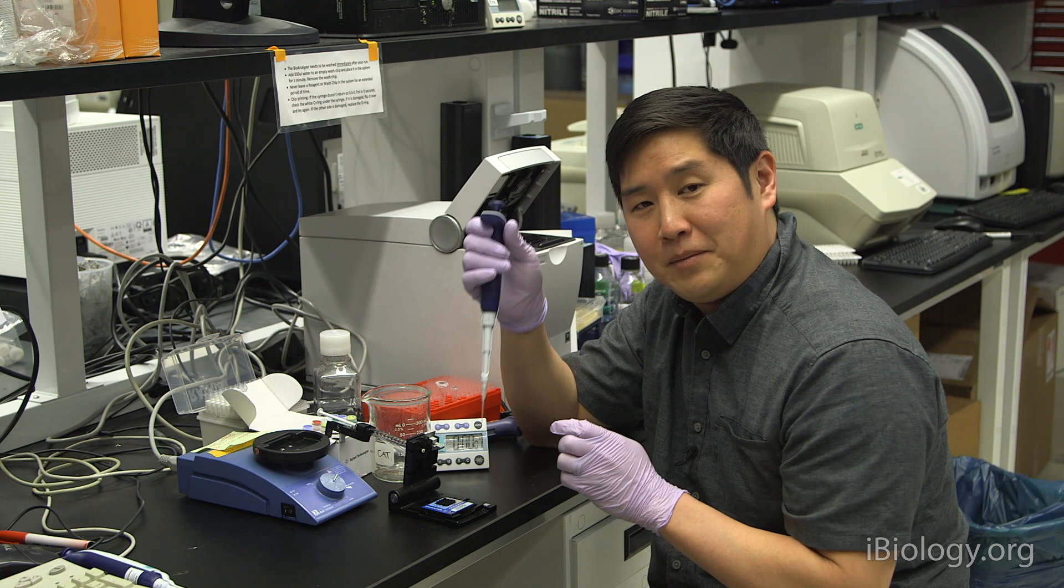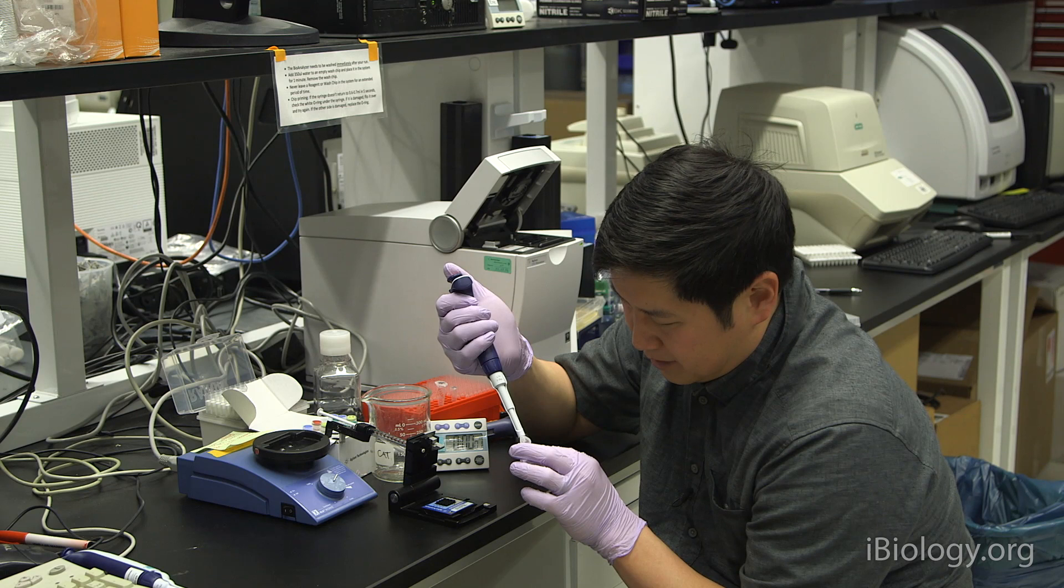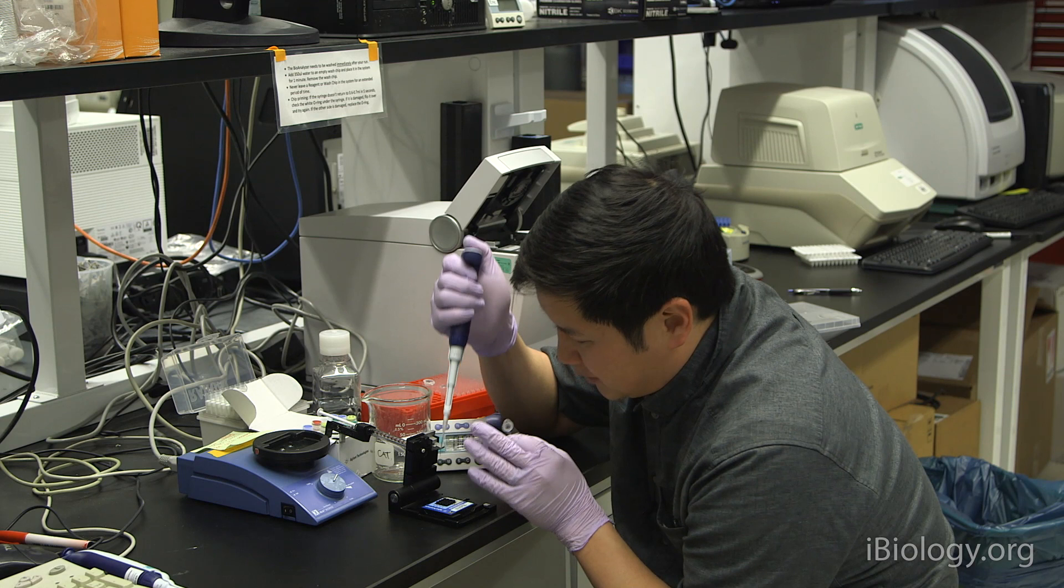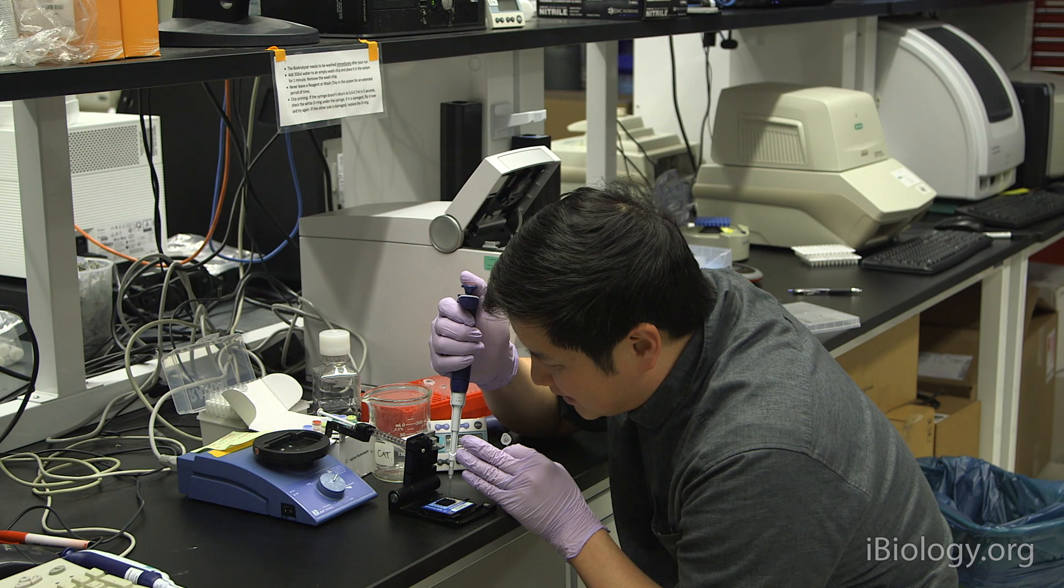Next, we'll add another 9 microliters of the gel dye mixture to the other three gel positions on the chip. These are the other three wells on the right side of the chip. You can use the same pipette tip for all of these, and again, just remember not to expel any air bubbles towards the bottom of the wells.